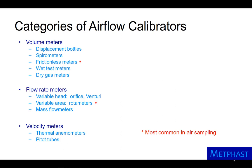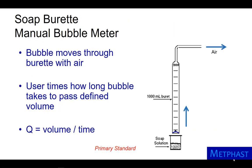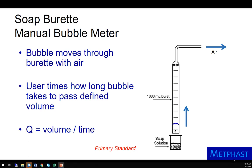The most common types of airflow calibrators used in air sampling are frictionless volume meters and rotometers. A soap burette is also known as a manual bubble meter. The open end of the burette is dipped into a soap solution until a bubble is formed. The bubble moves upward with the air through the burette. The user times how long the bubble takes to pass a defined volume. Air flow is then calculated as the volume divided by the time.